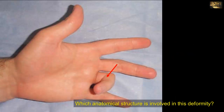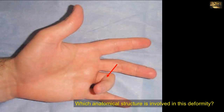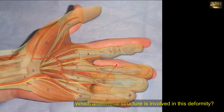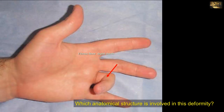Which anatomical structure is involved in this deformity? Thickening of a fibrous digital sheath produces stenosis of the osseofibrous tunnel, so it is the fibrous flexor sheaths that are involved in this deformity. The thickening is the result of repetitive, forceful use of the fingers. The tendons of flexor digitorum superficialis and flexor digitorum profundus are entrapped in the tunnel, and the person is unable to extend the finger. When the finger is extended passively, a snap is audible, and flexion produces another snap. Clinically, it is called snapping finger or trigger finger.